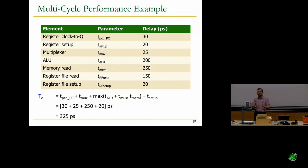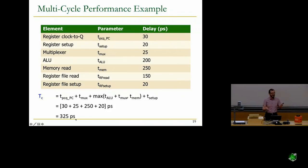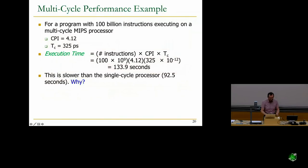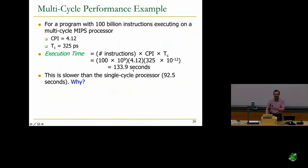Is 325 picoseconds good enough? For the same 100 billion instruction program, CPI is 4.12 and clock cycle time is 325 picoseconds. Execution time is 100 billion × 4.12 × 325 ps, giving about 133.9 seconds — which is actually worse than the single-cycle machine's 92.5 seconds.